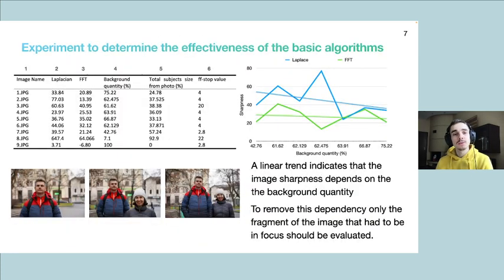However, it turns out that in the purest form, these algorithms are not effective enough for photos of people taken on professional cameras. In the results of this small experiment, we can see that there is a direct negative correlation of sharpness to background quantity. So the more background the photo has, the less sharp it will be considered by these algorithms.